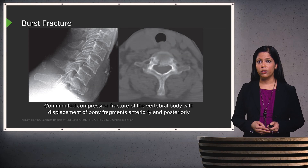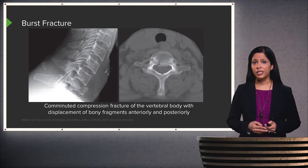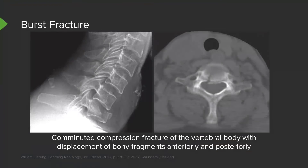Here is an example of a radiograph and a CT scan demonstrating a burst fracture. You can see a comminuted compression fracture of the vertebral body with displacement of bony fragments posteriorly into the spinal canal. Looking at the posterior vertebral line, at the level of the fracture it's displaced posteriorly, indicating posterior retropulsion of fragments. On the CT scan, the fragment is clearly pushed posteriorly into the spinal canal.